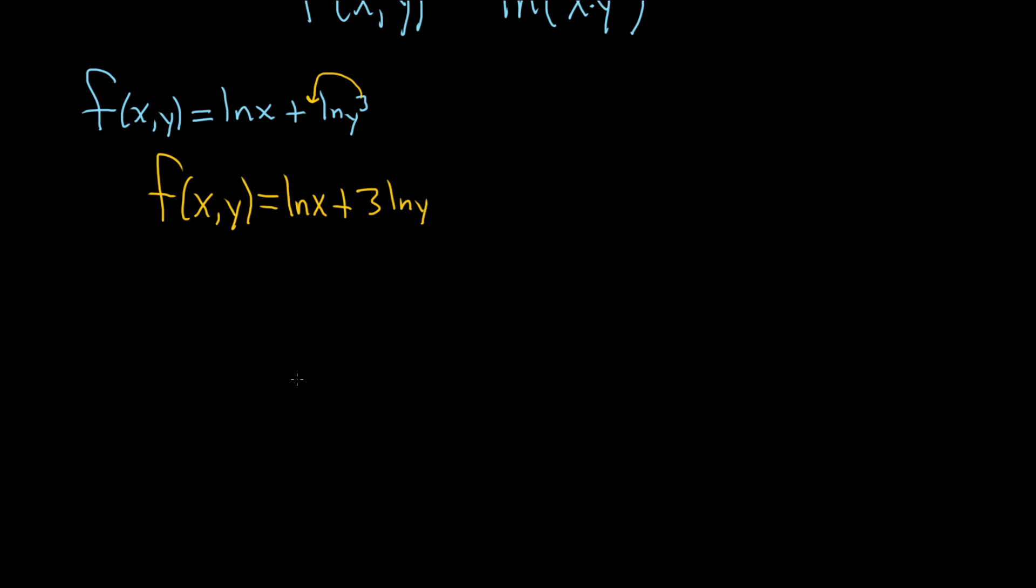Let's do the partial with respect to x first. So del f, del x. When you're computing the partial derivative of a function with respect to x, you treat all of the other variables as constants. So in particular, this natural log of y is a constant, and the derivative of a constant is 0.